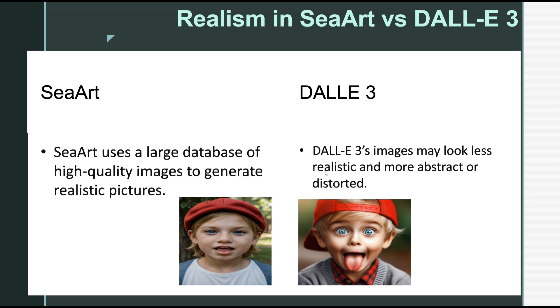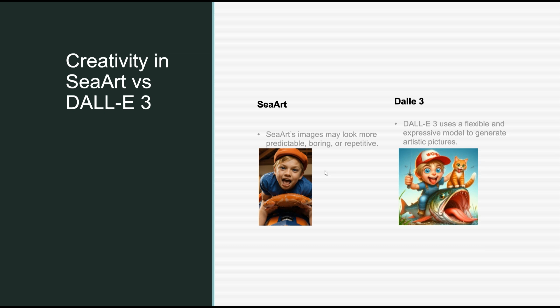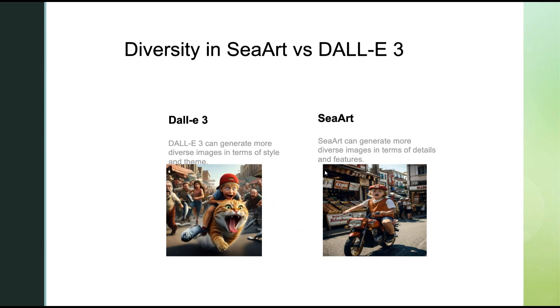Creativity — how novel and original the images are. DALL-E 3 is better than SeaArt in this criterion, as it uses a more flexible and expressive model to interpret the words and generate artistic pictures. DALL-E 3 can create images that are unexpected, surprising, or humorous, and can also handle complex or ambiguous prompts. SeaArt's images may look more predictable, boring, or repetitive than DALL-E 3's images. Diversity — how varied and different the images are. DALL-E 3 and SeaArt are both capable of generating diverse images, but with different strengths. DALL-E 3 can generate more diverse images in terms of style and theme, creating images that are surreal, fantastical, or whimsical, and can mix and match elements from different domains.